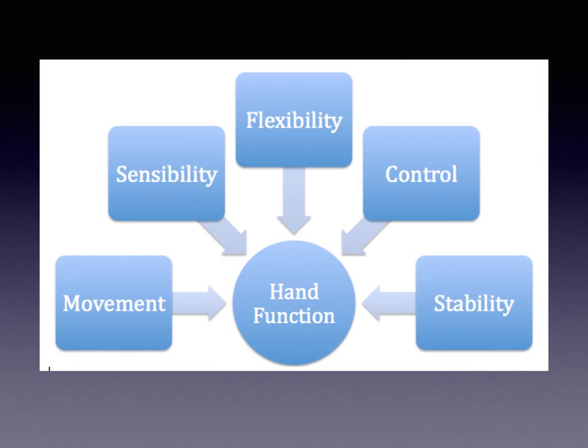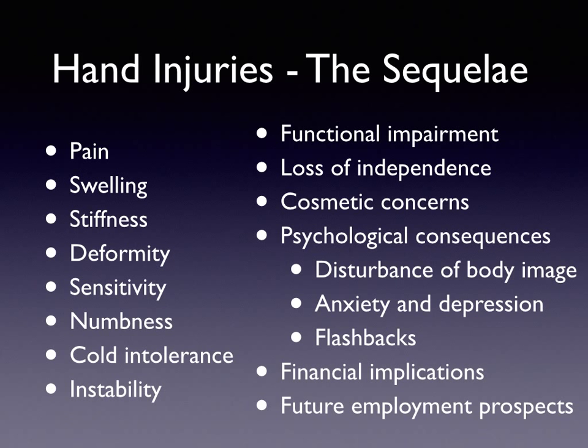We need a number of things to contribute to optimal hand function: the hand needs to be able to move, it needs to be sensate, flexible, we need to have control over movement, and it needs to be stable within its joints. After an injury there's obviously pain, swelling, stiffness, deformity, maybe sensitivity or numbness following nerve injury, cold intolerance, and there may be joint instability.